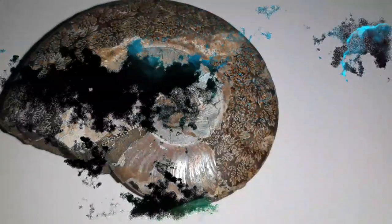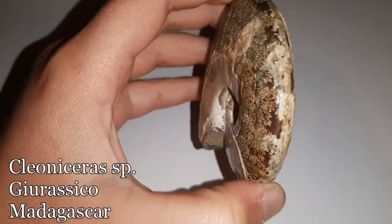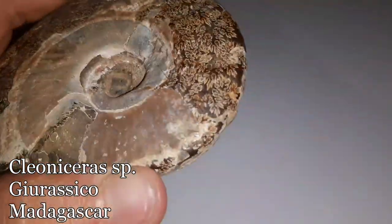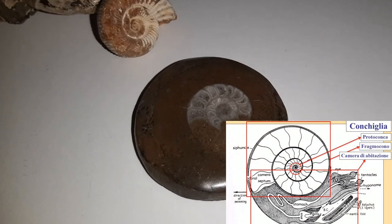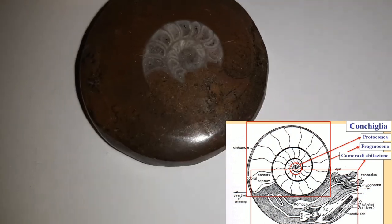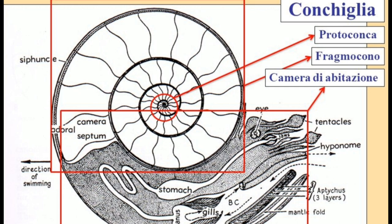Le ammoniti avevano un guscio a spirale piana, che dava la caratteristica forma almeno nei primi tempi, fino al Cretaceo inferiore-medio. Il guscio era concamerato, quindi diviso in camere, in cui si poteva riconoscere una camera d'abitazione, dove l'animale risiedeva; una protoconca, che costituiva il primo guscio dell'animale quando era in stadio larvale e oggi costituisce il centro della spirale; e il fragmocono, che è tutta la parte del guscio compresa tra la protoconca e la camera d'abitazione.